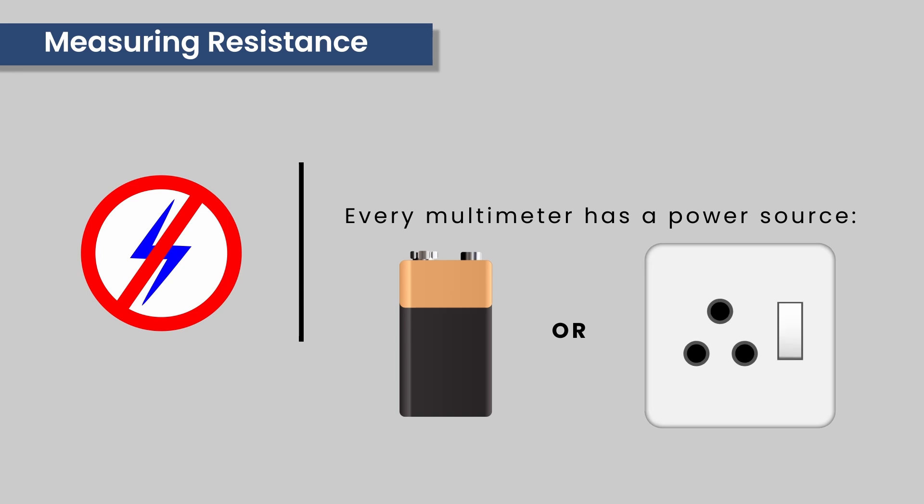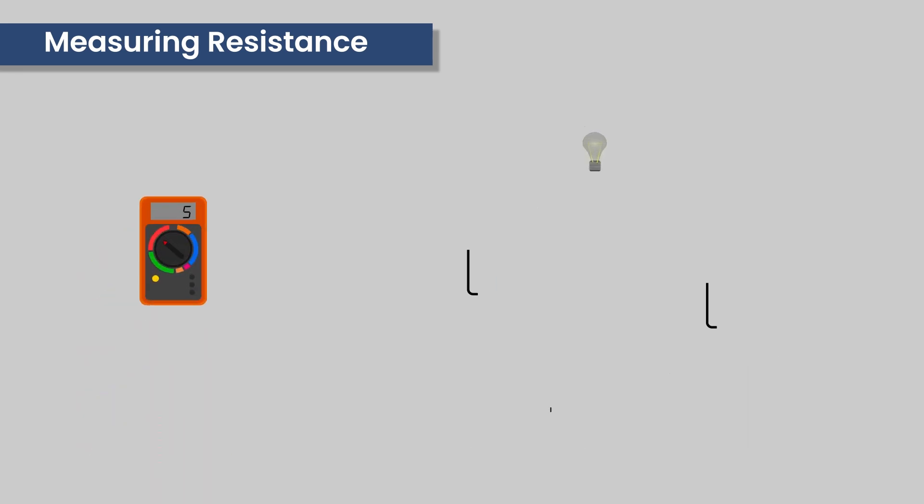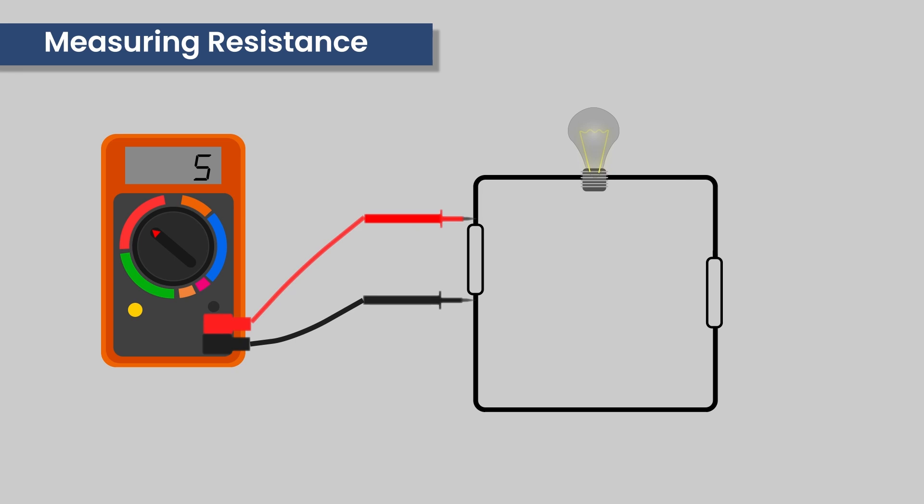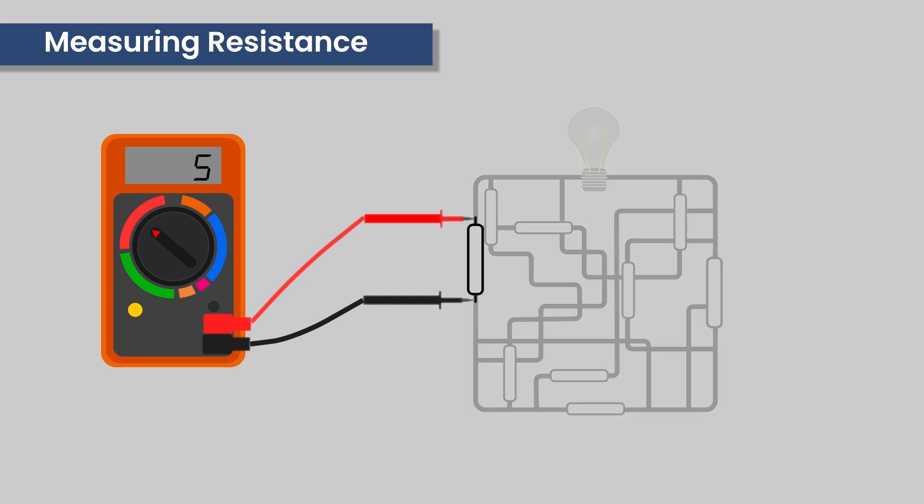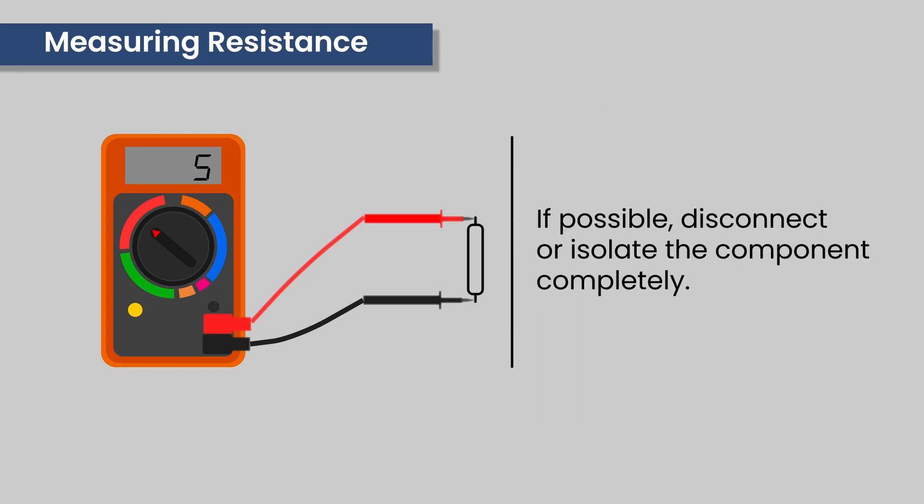Voltage is induced into the circuit or device by the multimeter and the resistance is then measured and displayed. When more complex circuits are measured, make sure that you are only measuring the resistance on one component or the reading will not be accurate. If possible, disconnect or isolate the component being measured.